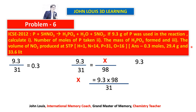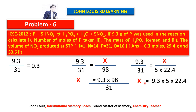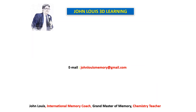Third question — volume of NO₂ produced at STP: nitrogen dioxide is a gas, so we use 22.4 liters per mole. There are 5 moles of NO₂ in the balanced equation. Using the formula: 9.3 ÷ (1 × 31) = x ÷ (5 × 22.4). Therefore x = 9.3 × 5 × 22.4 ÷ 31. Simplify to find the volume of NO₂ produced.